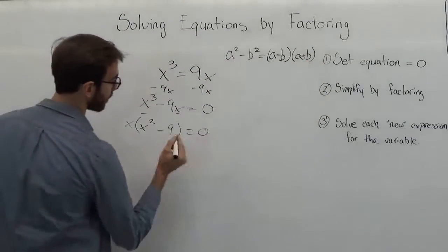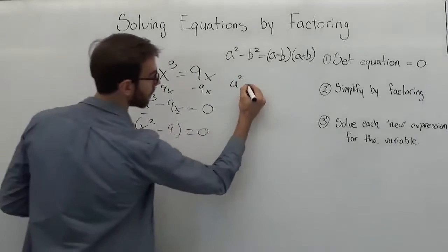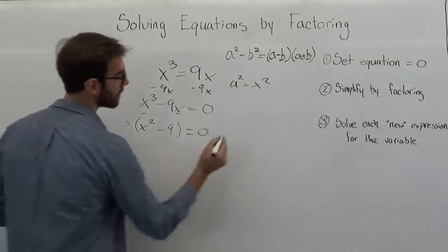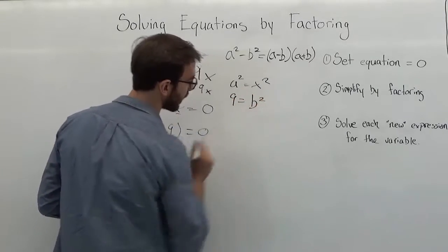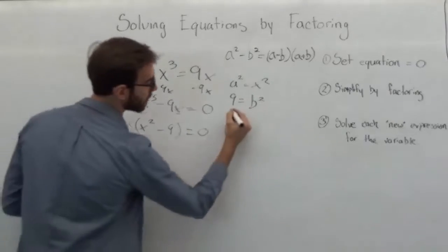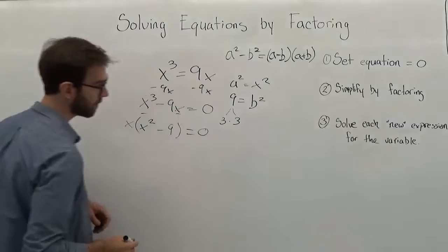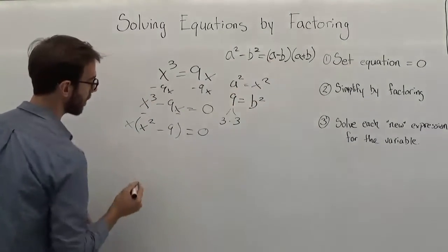So what we have here, we've got x squared. We'll say that is our a. And we have 9 squared, or 9, that will be equal to our b squared. And we know that 9 can be written as 3 times 3, right? So when we go to set this back up...